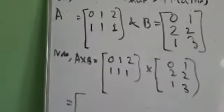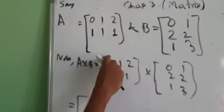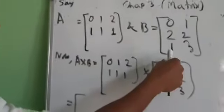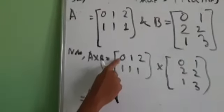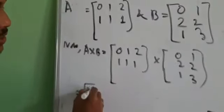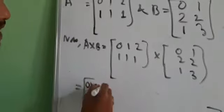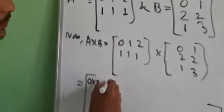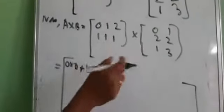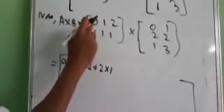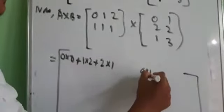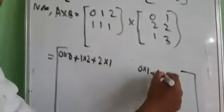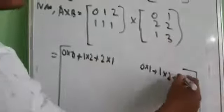Matrix multiplication is done by multiplying the first row with the first column of matrix B. That means: 0×0, plus 1×2, plus 2×1. Then the first row with the second column: 0×1, plus 1×2, plus 2×3.